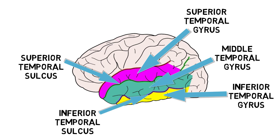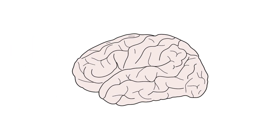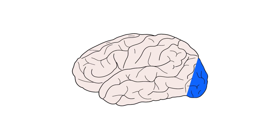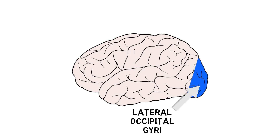The superior temporal gyrus often contains a very small portion of the primary auditory cortex, although the majority of the primary auditory area is found on separate gyri that extend into the lateral sulcus and are not visible on the lateral surface of the brain. The lateral surface of the occipital lobe is made up of a collection of gyri sometimes simply referred to as the lateral occipital gyri.